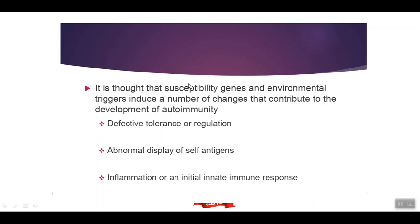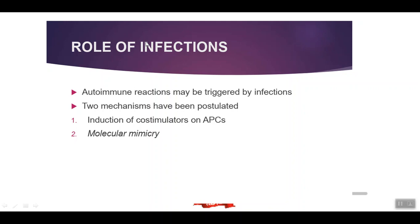Susceptibility genes and environmental triggers induce changes that contribute to the development of autoimmunity, including defective tolerance and regulation, abnormal display of self-antigens, inflammation, and initial innate immune response. Infections can induce abnormal immune response and finally lead to autoimmune disease. We have many examples in cardiovascular medicine.